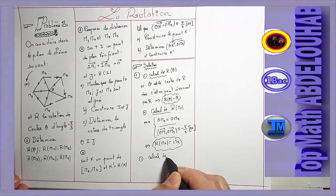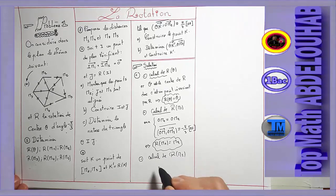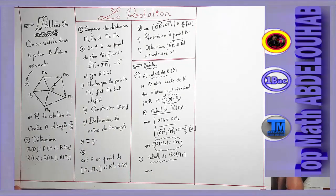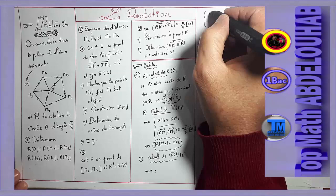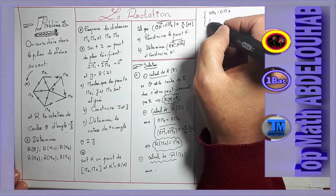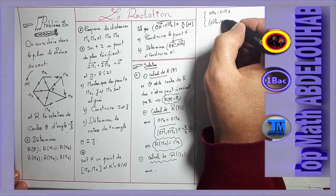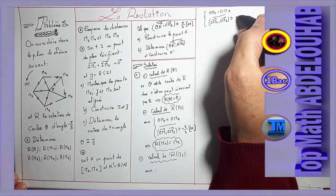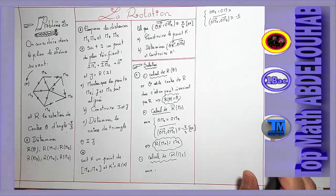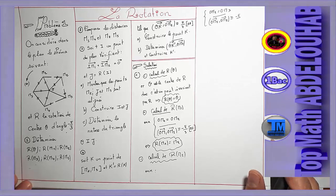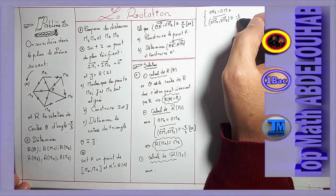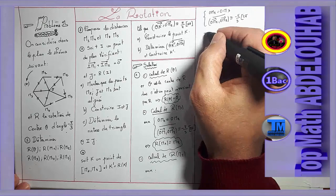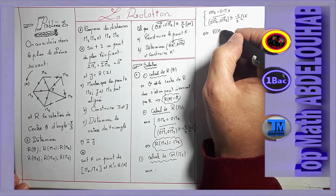Calcul de R(M2). On va faire le même raisonnement. Le triangle OM2M3, par hypothèse, c'est un triangle équilatéral. Donc OM2 égale OM3, et la mesure de l'angle orienté OM2, OM3, puisqu'on se dirige vers le sens négatif, est congrue à moins pi sur 3 modulo 2pi. Et d'après la définition de la rotation, ceci est équivalent que R(M2) est égale à M3.